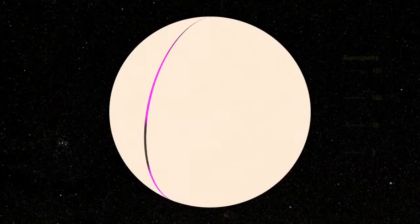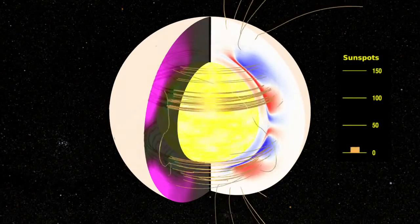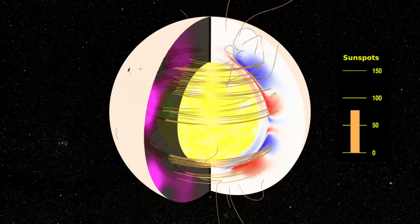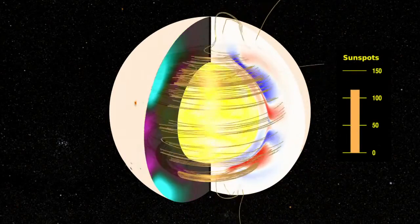Solar flares and CMEs are all driven by magnetic reconnection. This is where the Sun winds up the magnetic field and causes oppositely directed magnetic fields to annihilate. But you can't just get rid of energy — you have to convert that energy and transfer it into other things such as plasma motions, accelerating the plasma, heating up the plasma, and also giving out more light.